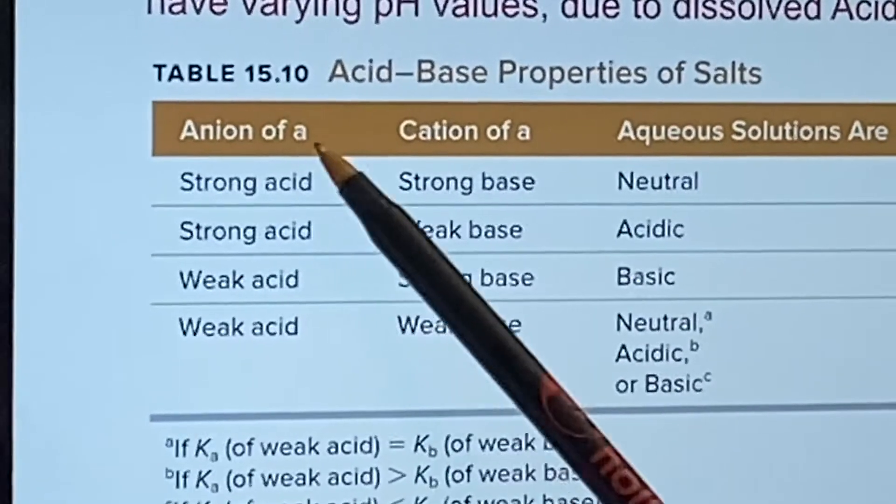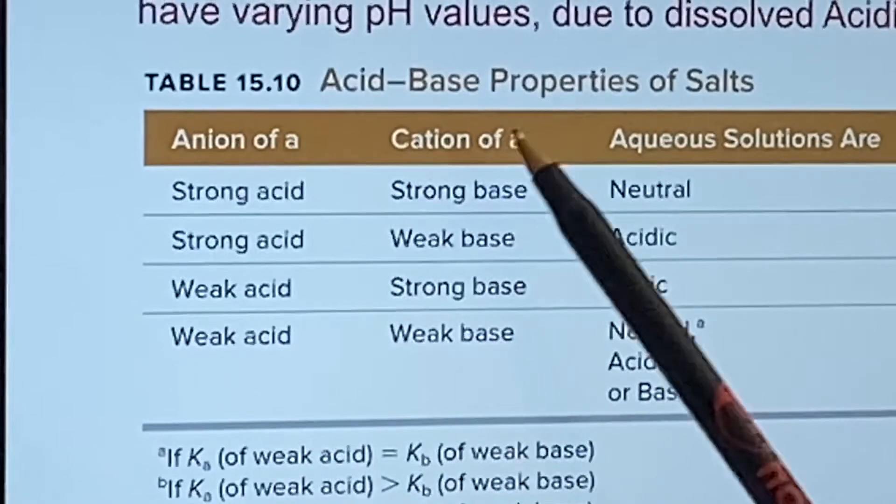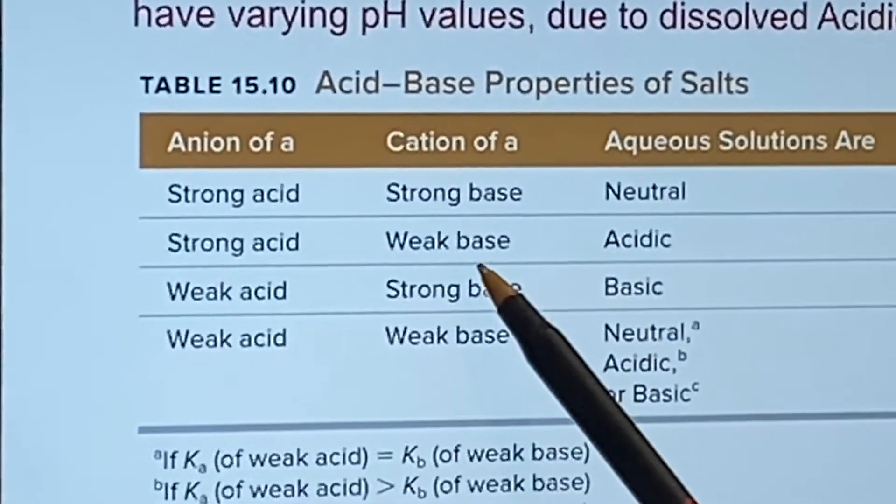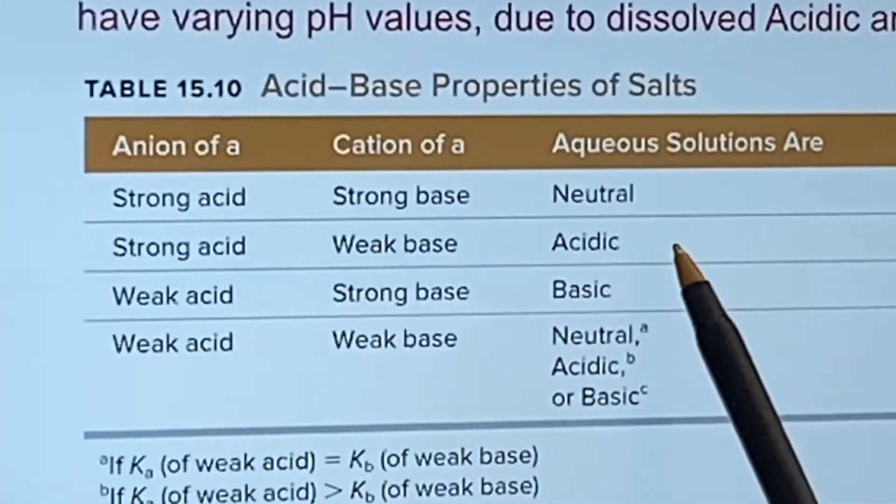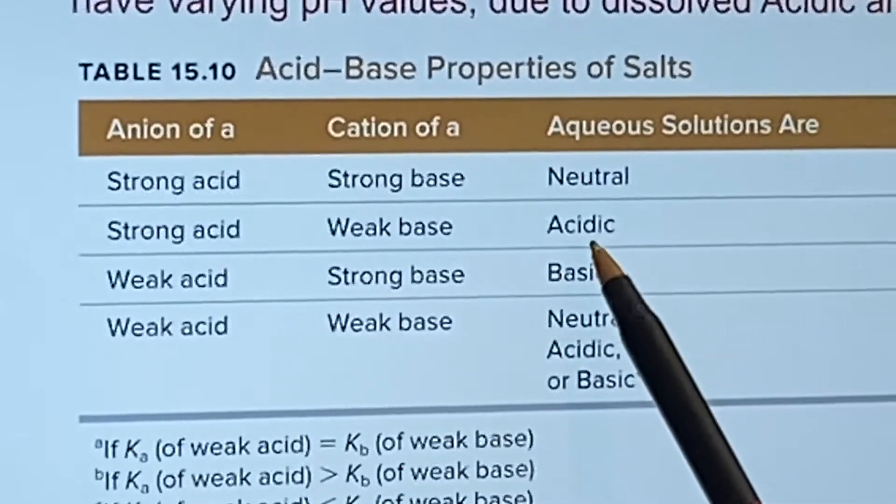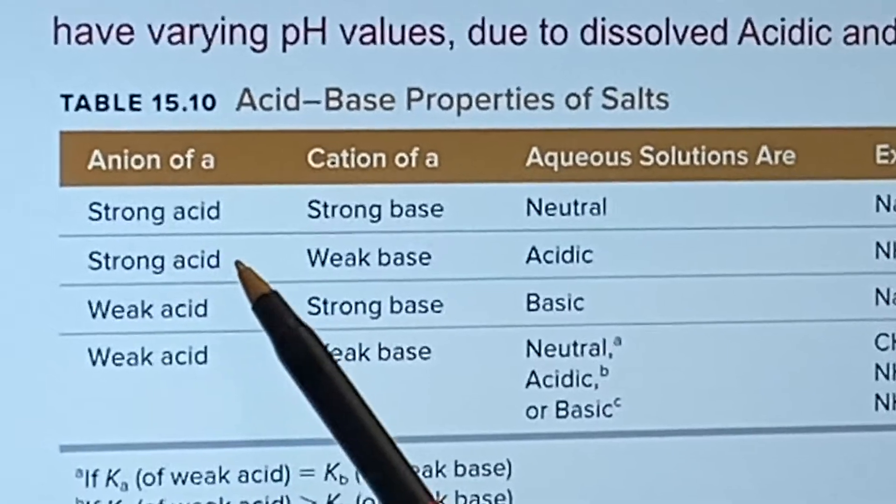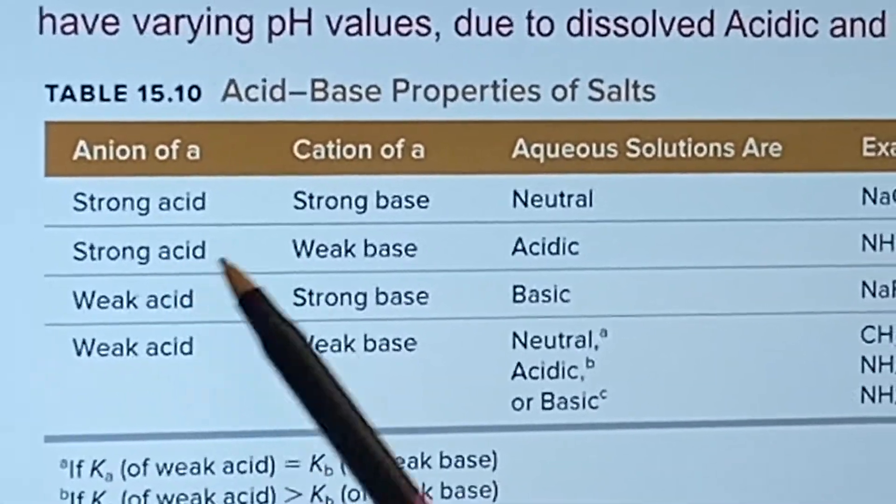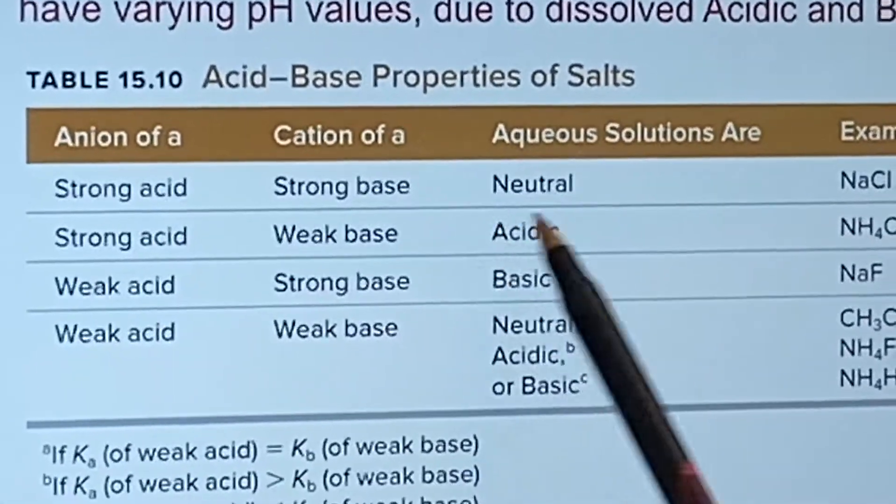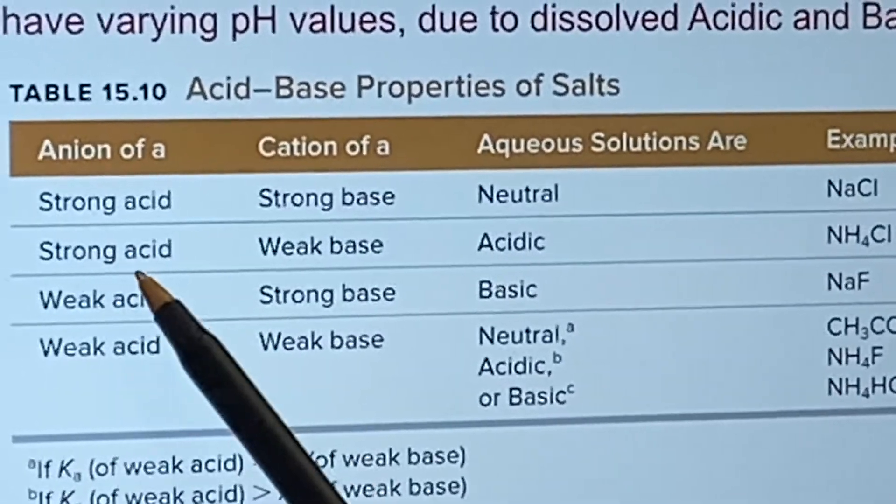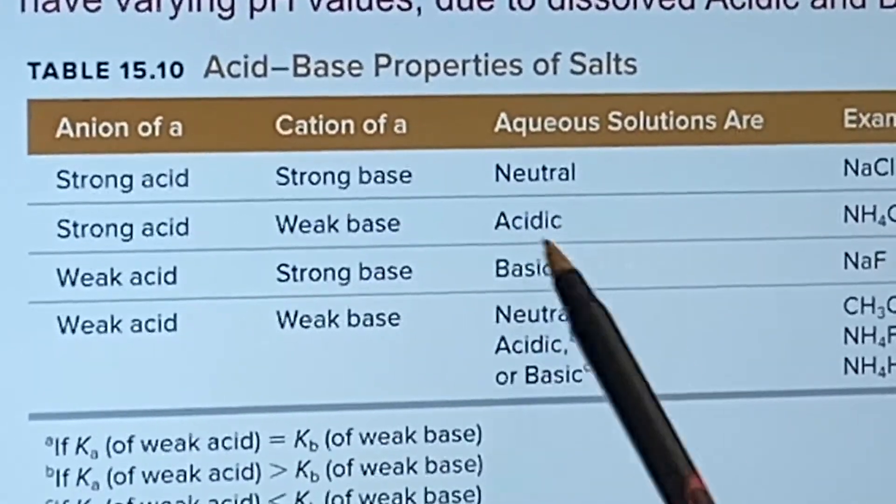If you have the anion come from a strong acid, but the cation come from a weak base, you're going to end up with a solution that is acidic. It came from a strong acid, weak base, strong acid. That's overwhelming it. So it's acidic. The strong one is going to rule the day.